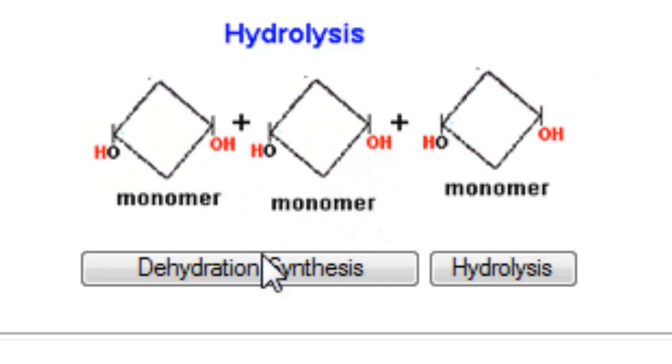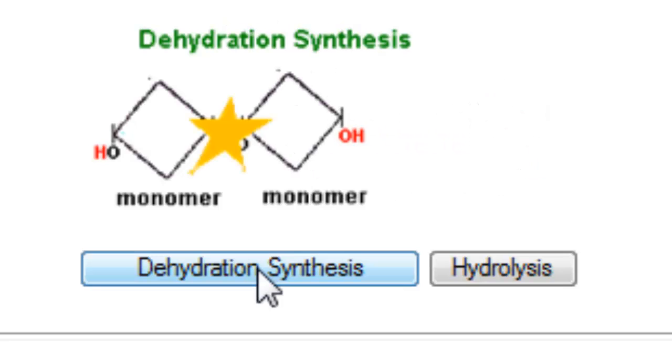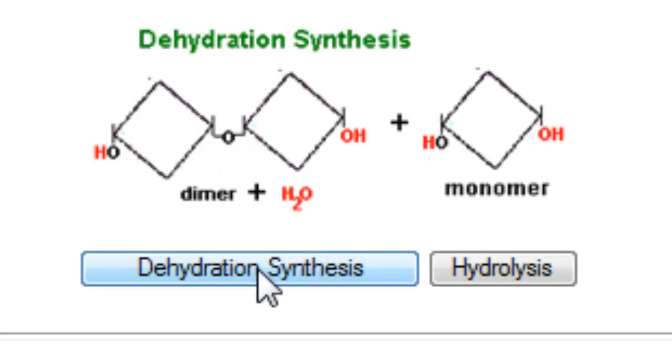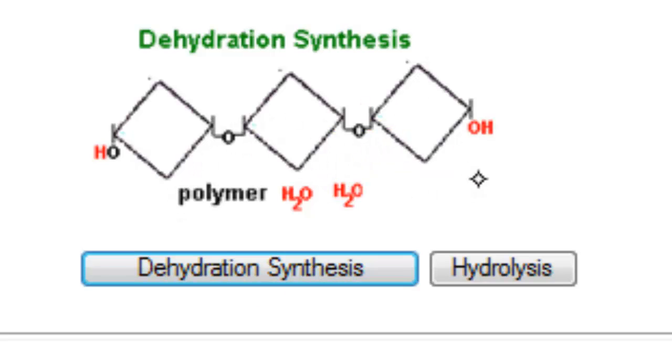First, we'll watch these polymers join together with dehydration synthesis. So they're coming together. To fit, they have to lose a water. There's another one coming together, and another water is lost. And now you've got three molecules stuck together. And that's formed a polymer.